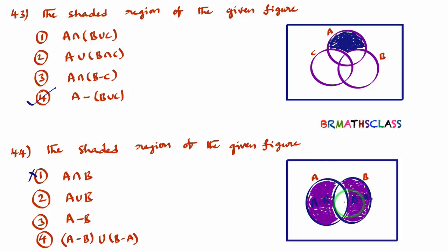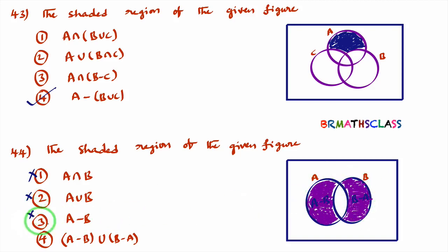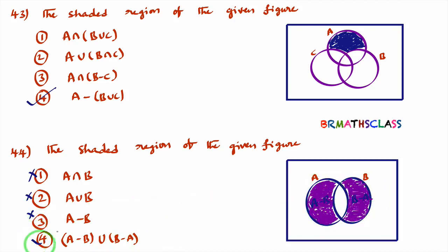A minus B alone gives only this one part, so that is also wrong. The correct answer is A minus B union B minus A, which covers both shaded parts. So the fourth option is the right option.